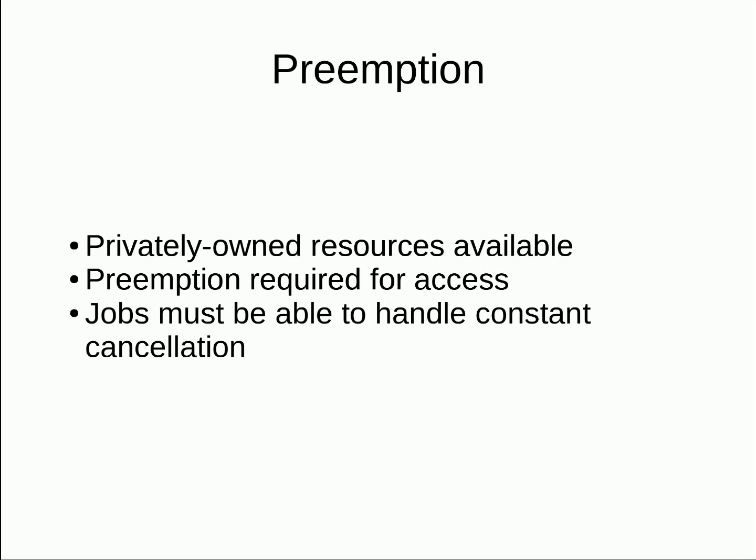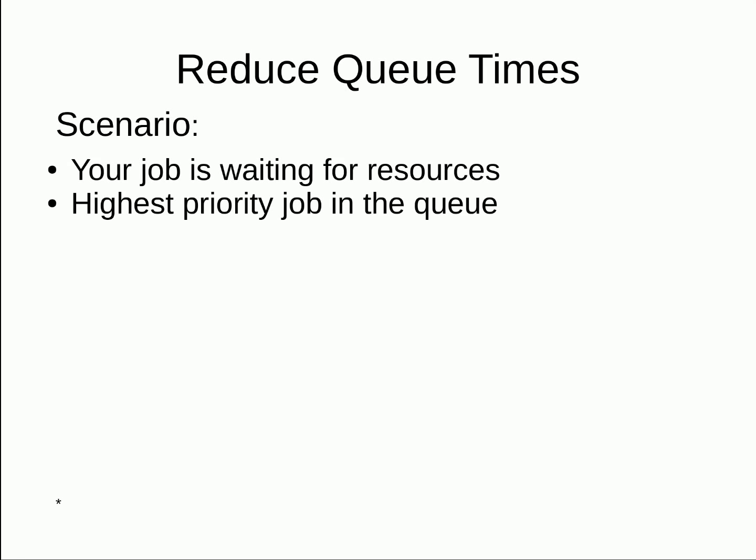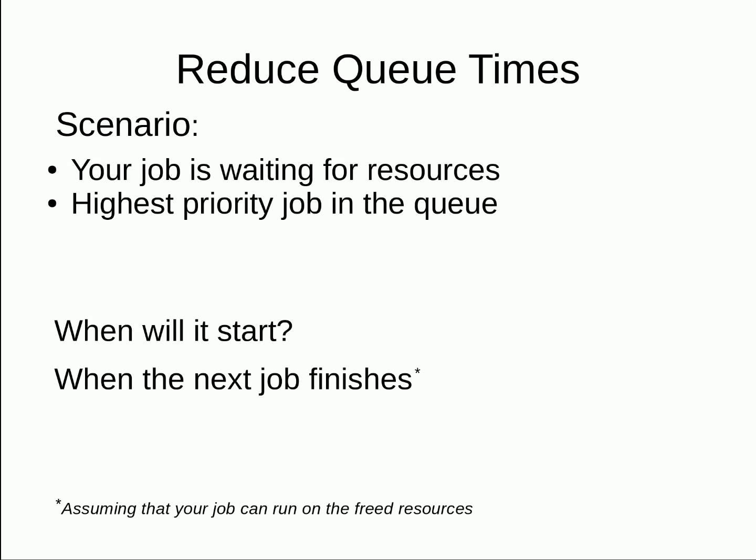The last thing to discuss is how to reduce your queue times. Here is a scenario to think about. A job you submit is waiting for resources and is the highest priority job in the queue. When will the job start? Your job will start when a running job finishes. For anyone waiting in the queue, you want jobs to finish soon. If you have multiple jobs queued up, you want lots of jobs to finish soon. What you want is turnover.